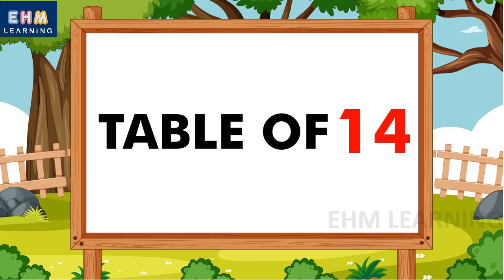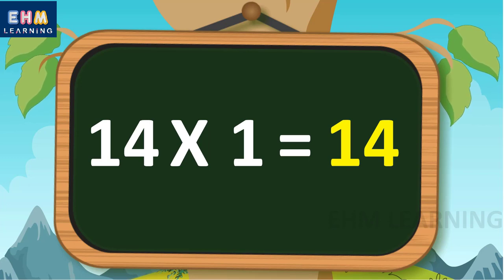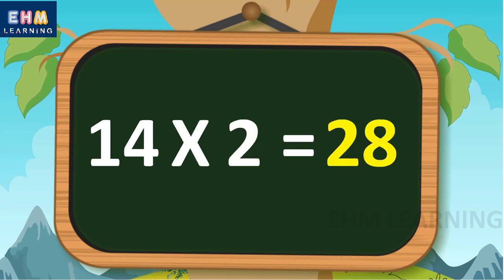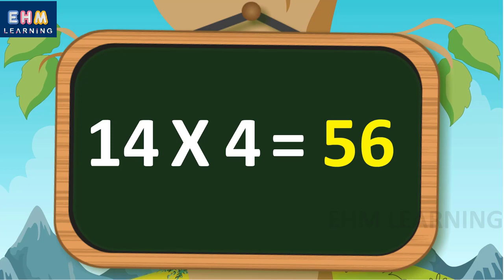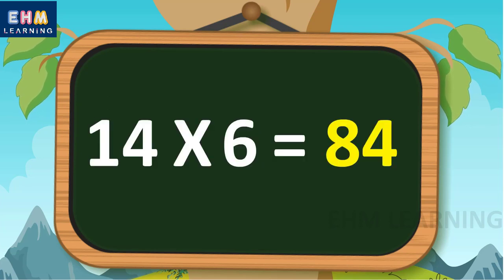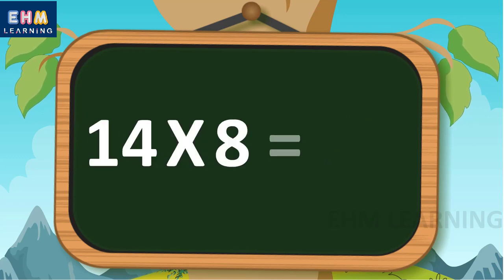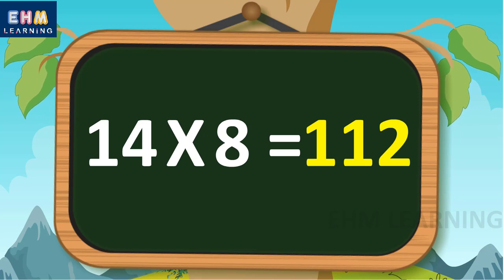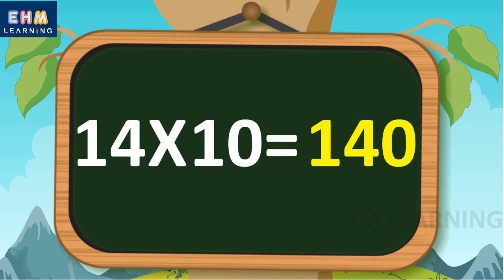Table of fourteen. Fourteen ones are fourteen, fourteen twos are twenty-eight, fourteen threes are forty-two, fourteen fours are fifty-six, fourteen fives are seventy, fourteen sixes are eighty-four, fourteen sevens are ninety-eight, fourteen eights are one hundred and twelve, fourteen nines are one hundred and twenty-six, fourteen tens are one hundred and forty.